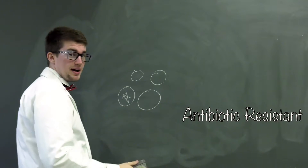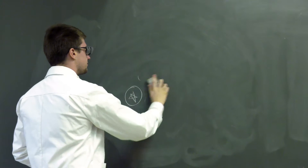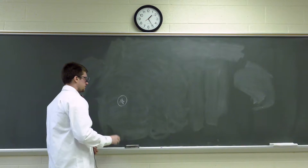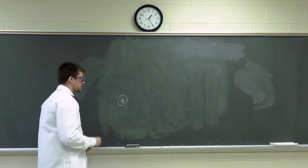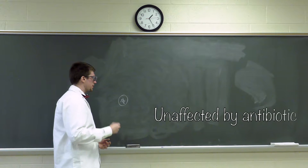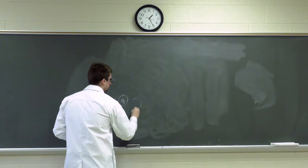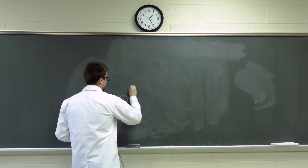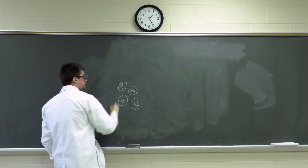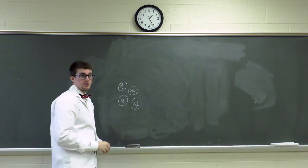So this is what happens when antibiotics are introduced. But why is this one still left over? This one's left over because it was antibiotic resistant, which means it's unaffected by the antibiotic. So when this bacteria now reproduces, they will all be resistant to antibiotics — which means the antibiotic we used originally will not work on these bacteria.